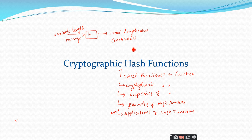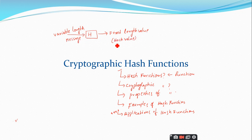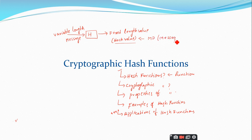So it is a very simple definition. A hash function is a mathematical function which converts a variable length message into a fixed length value, which we call the hash value. We can also call this hash value MD, where MD stands for message digest.